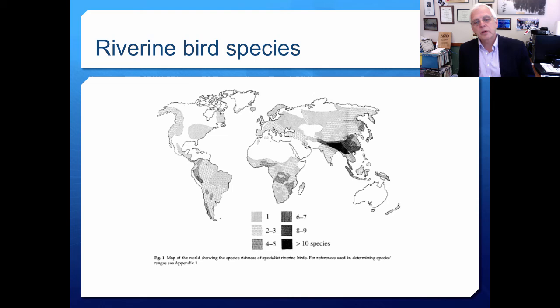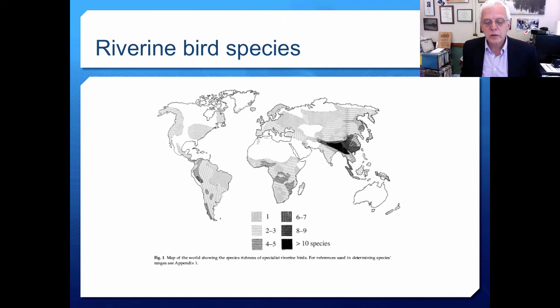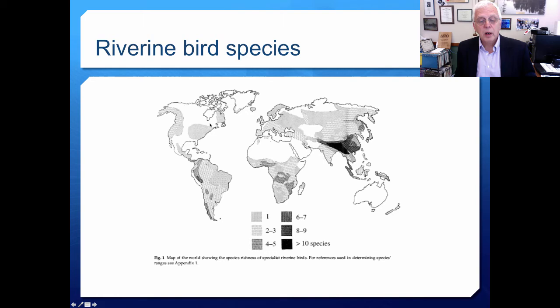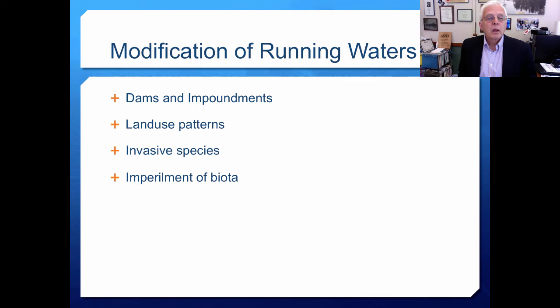Many bird species rely on rivers and river networks. A world map shows the species richness of specialist riverine birds — where they are very abundant, river networks are very complex. In North America, the number of specialist riverine birds is very few, but in many places around the world they are very abundant and rely on good, healthy river ecosystems.